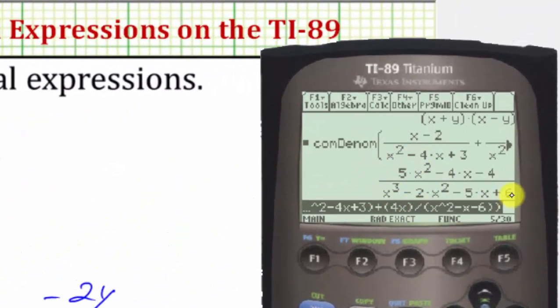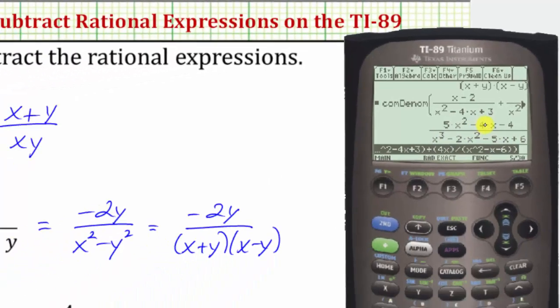So this is the sum. Again, notice how the denominator is multiplied out. We'll come back and factor this in a moment. Let's go ahead and write this down.